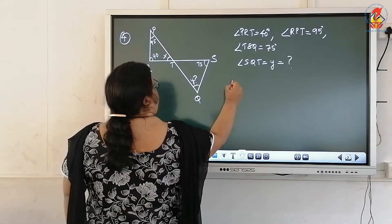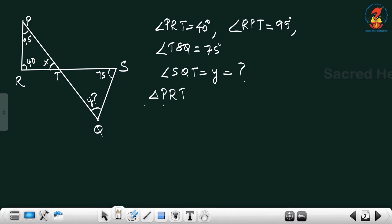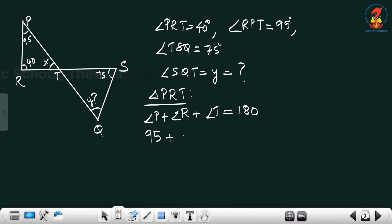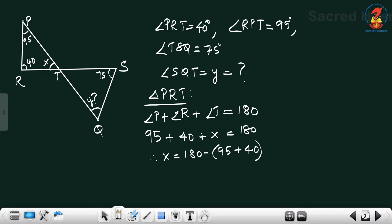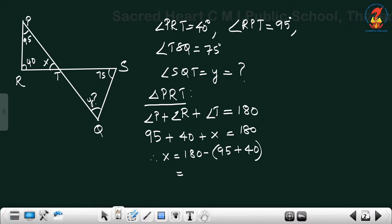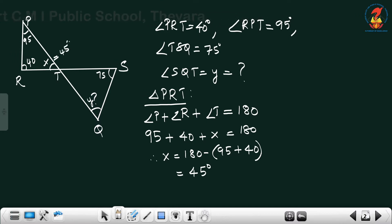Consider triangle PRT. The angles of triangle PRT are angle P, angle R, and angle T. The sum of the angles of a triangle equals 180 degrees. Angle P is 95, angle R is 40, and angle T is X. So 95 plus 40 plus X equals 180. Therefore X equals 180 minus 135, which is equal to 45 degrees.